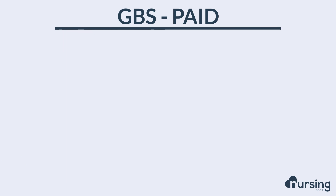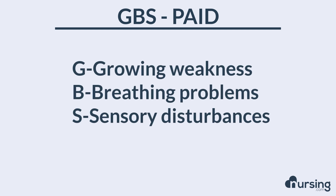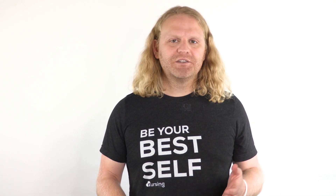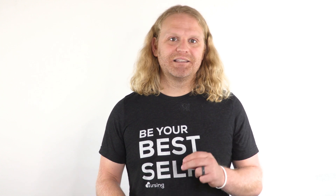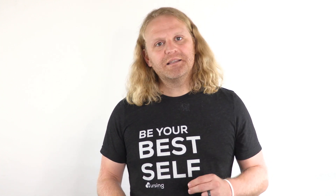For G, we're talking about growing weakness — the patient's going to continue to get weaker and weaker. The B is breathing problems; they're going to experience a lot of breathing problems. The S is for sensory disturbances, or any disorder that affects our special senses like vision, hearing, taste, and smell. So that's the GBS.